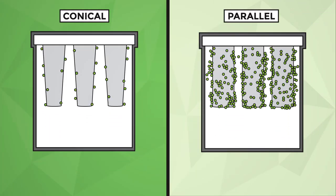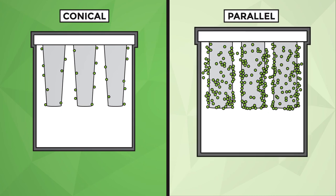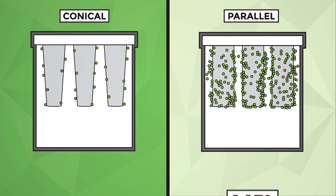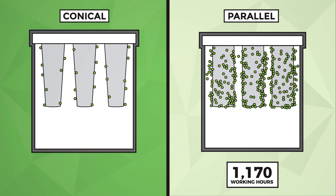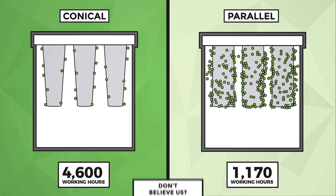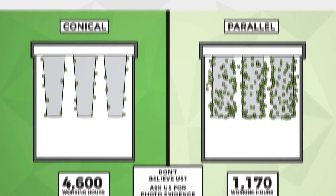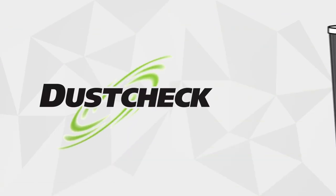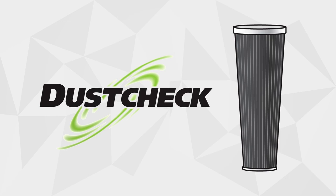This is an identical application. The parallel elements only operated for 1,170 working hours. The conical elements are still operating at 4,600 working hours. The benefits of using DustCheck's conical filter technology are quite significant.